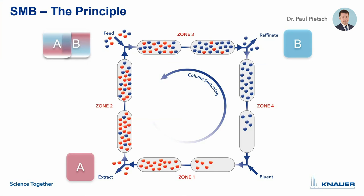The SMB is divided — as in TMB — by the two inlet streams, feed and eluent, and the two outlet streams, extract and raffinate, into four zones. The solid phase now consists of columns connected in series; usually one to four columns per zone are used — in this example, two columns per zone. The counter-current is achieved by periodically switching the inlets and outlets in the flow direction of the liquid phase. If the inputs and outputs are regarded as reference systems, the columns move against the flow direction. For example, an inlet element switched to the left causes a column to move to zone four, simulating the movement of the solid phase.